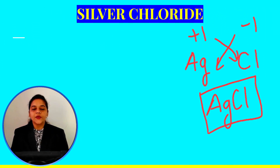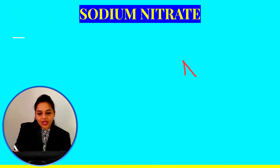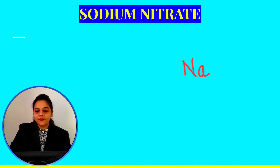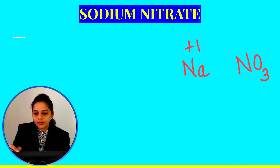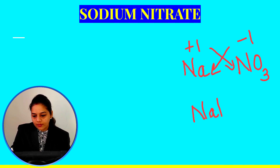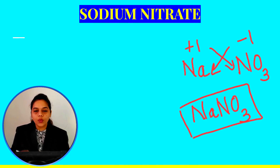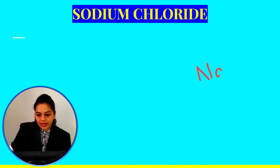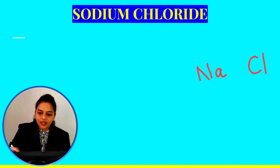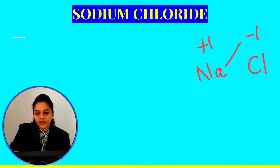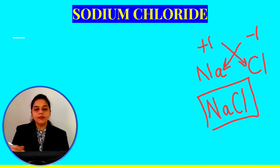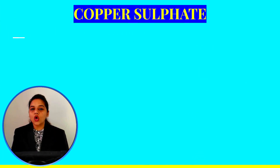Next is sodium nitrate. Write the symbol Na for sodium and NO3 for nitrate. Sodium is +1 and nitrate is -1. Interchange the valencies and ignore both the sign and the valency of 1. The chemical formula of sodium nitrate is NaNO3. Next is sodium chloride: Na is +1 and Cl is -1. Interchange gives NaCl — that is the chemical formula of sodium chloride.